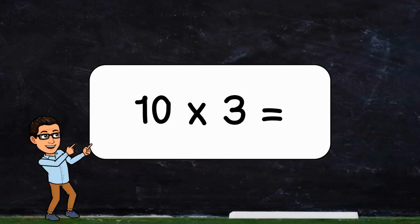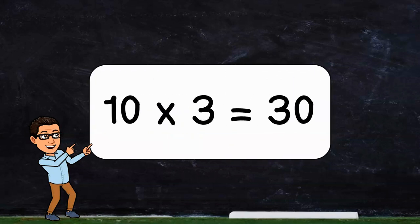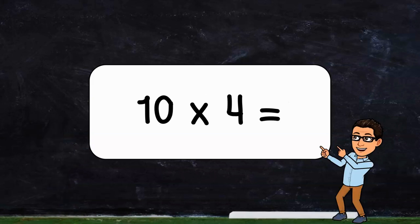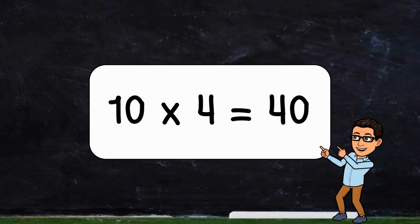10 times 3, 10 times 3 equals 30. 10 times 4, 10 times 4 equals 40.